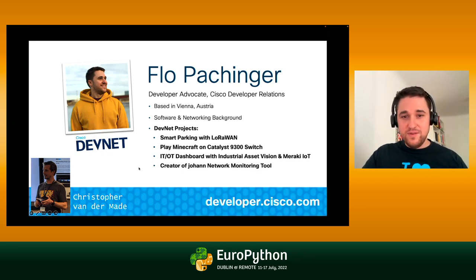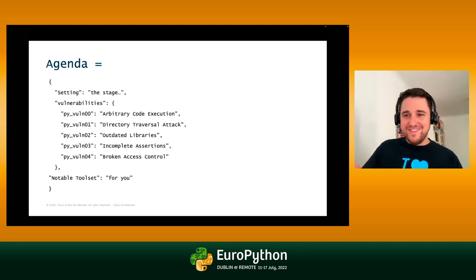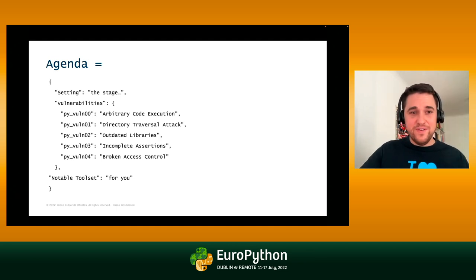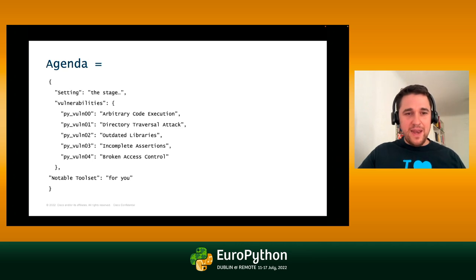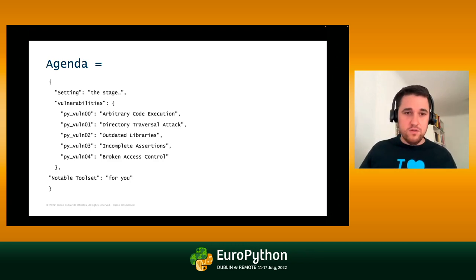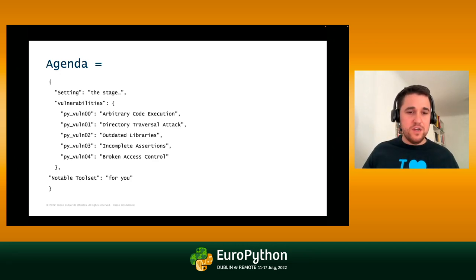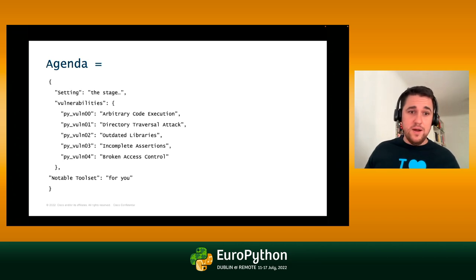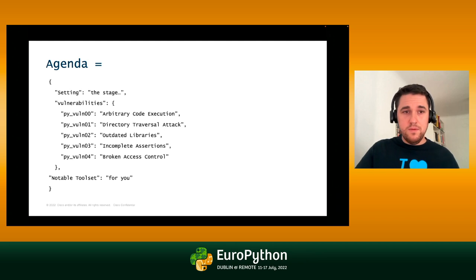What do I have planned for you today? The agenda is pretty simple. First, I'll set the stage on what this is about. Then I'll go through five common vulnerabilities, staying completely at the coding level — what mistakes you shouldn't make when coding in Python, especially in container and Kubernetes environments. Finally, I'll end with a notable toolset, covering monitoring tools for cloud-native and Kubernetes environments.